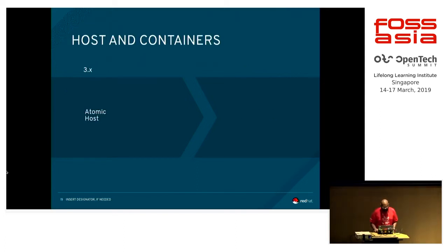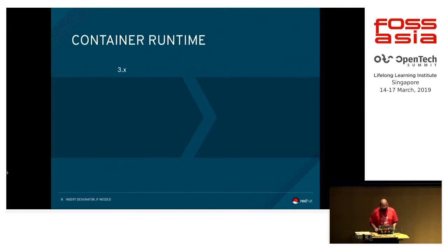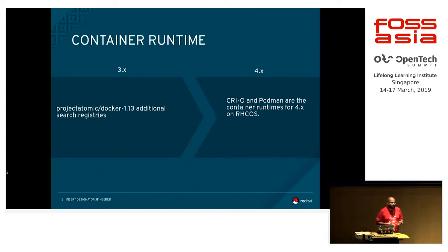Hosts and containers. Atomic host — previously we were using Atomic host, which is now replaced by CoreOS as mentioned earlier. Container runtimes — previously we were using Docker, which is not that safe. CRI-O and Podman will be the container runtimes we will be using now, because Red Hat has certified them and is giving support. If Red Hat is giving you support on Podman, then you can trust it, because Red Hat is one of the most trusted Linux distros in the world.